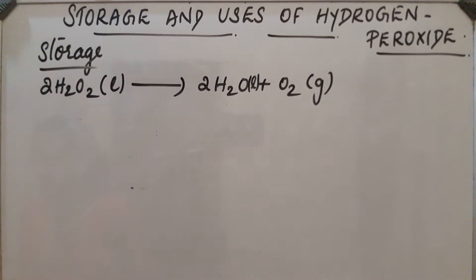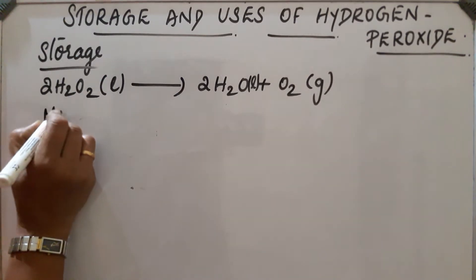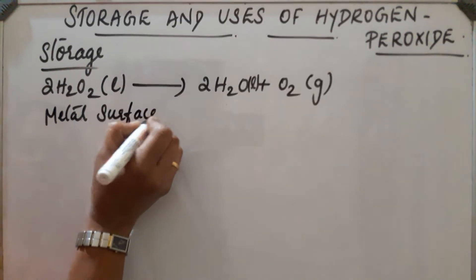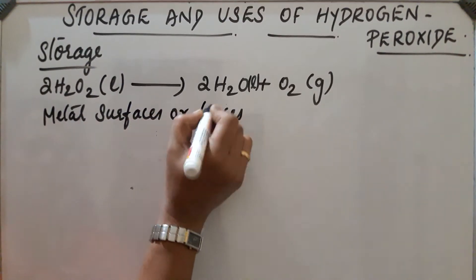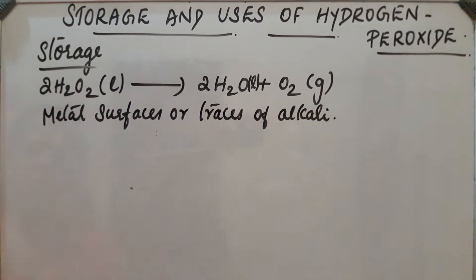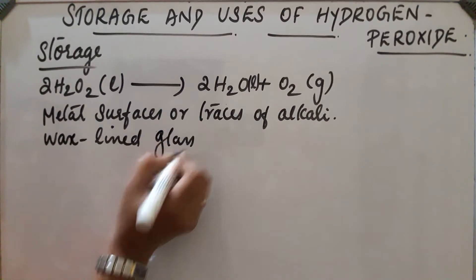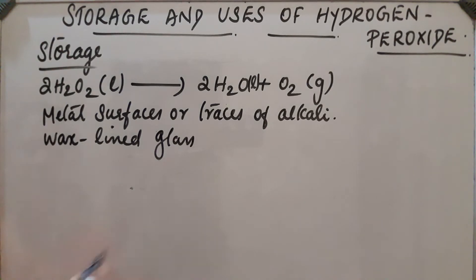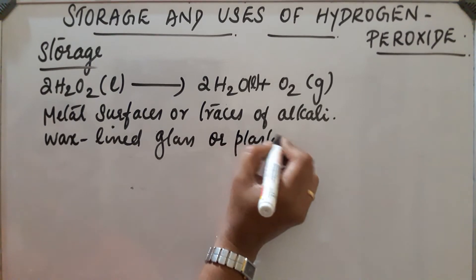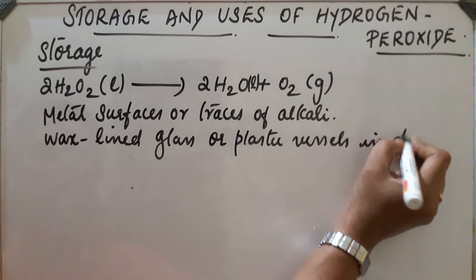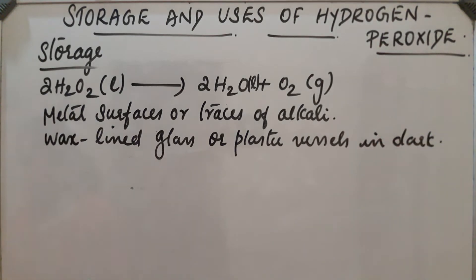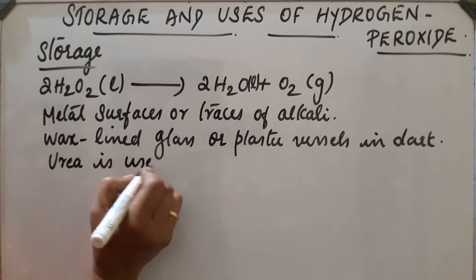In the presence of metal surfaces or traces of alkali, this reaction is catalyzed. So H₂O₂ is stored in wax-lined glass or plastic vessels in the dark, and urea is used as a stabilizer.